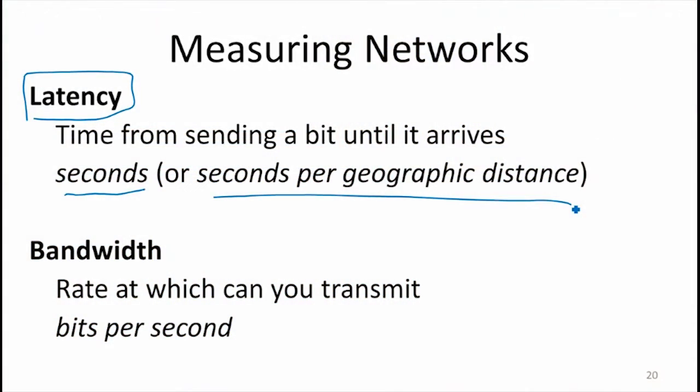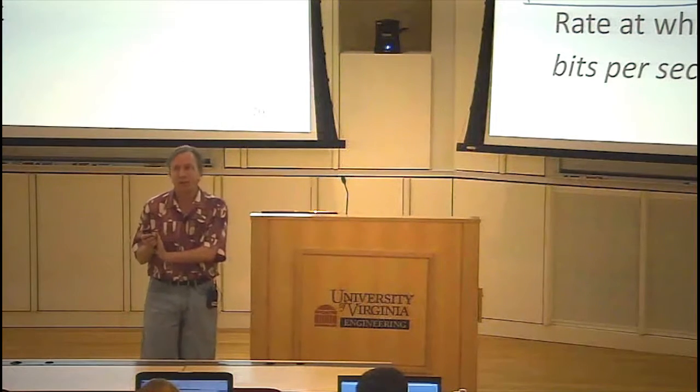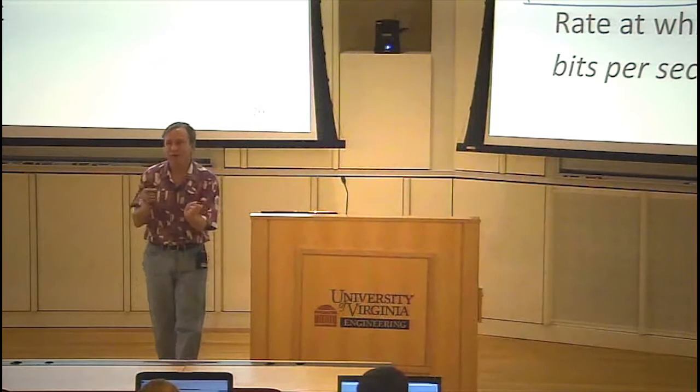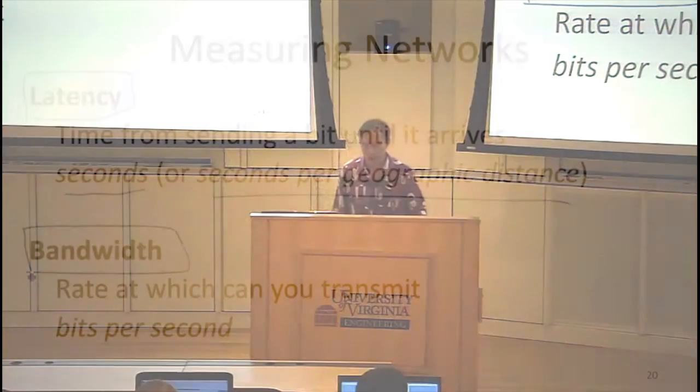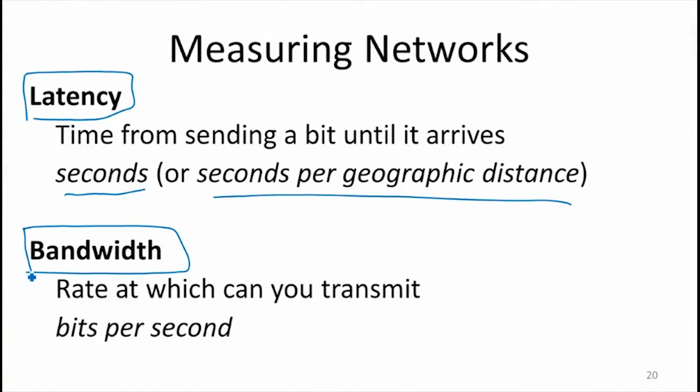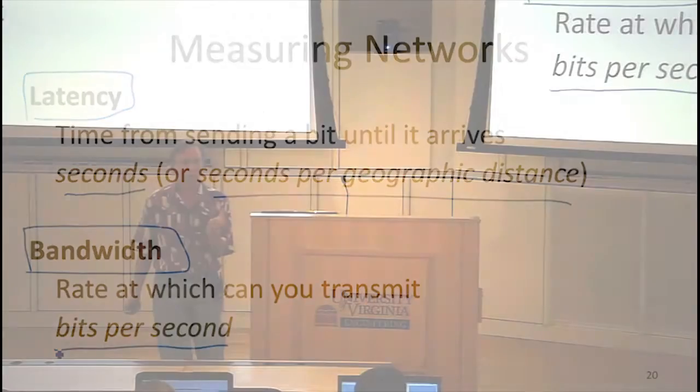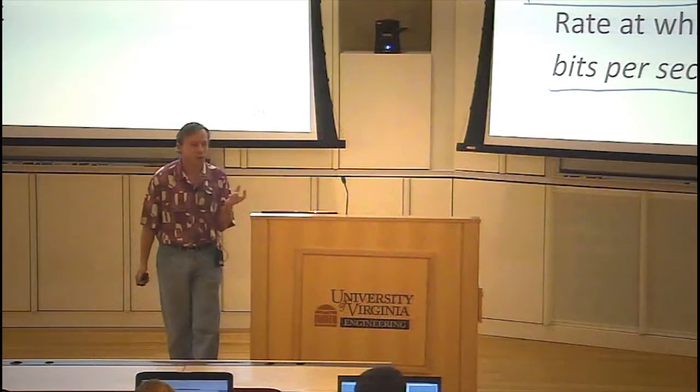The other property is bandwidth. Bandwidth is how much information can you send in some unit of time. The initial latency doesn't really affect the bandwidth. Once you've got the data streaming as fast as you can go, the bandwidth is how much can you transmit per second. This is going to be in units like bits per second or megabytes per second or gigabits per second. Some unit of information divided by some unit of time.